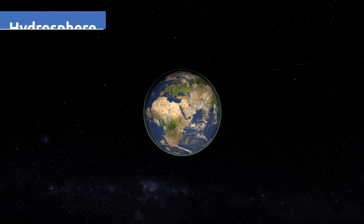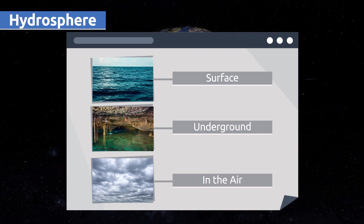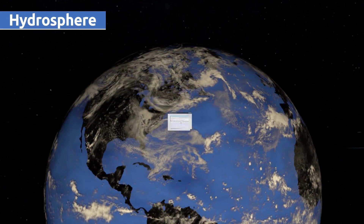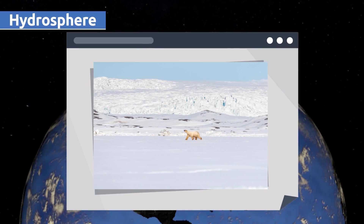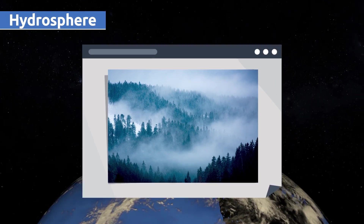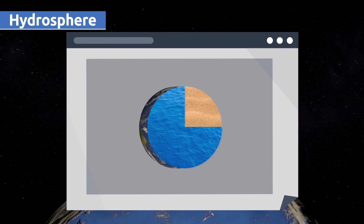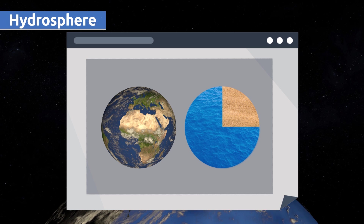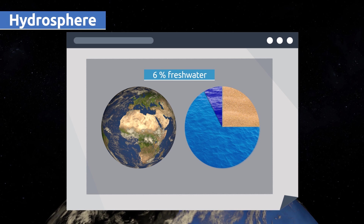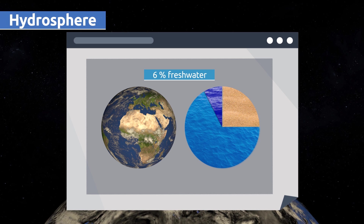The hydrosphere is made up of all of the water on the Earth's surface. This layer includes water on the surface, underground, and in the air. Water in the hydrosphere exists in three states: solid, liquid, and gaseous. The hydrosphere covers three-quarters of our planet. That's a huge amount of water, but only six percent is fresh drinking water — that's why we should save as much water as we can and use it wisely.